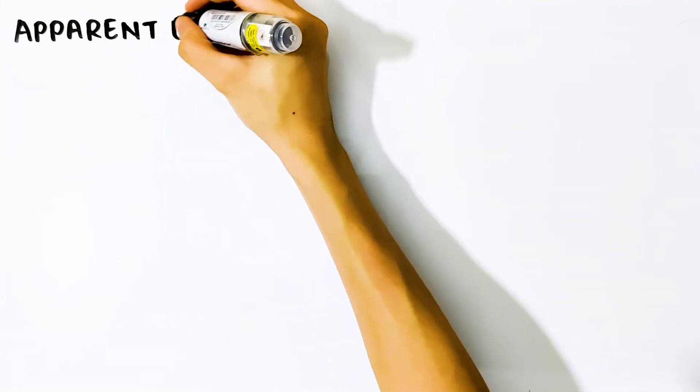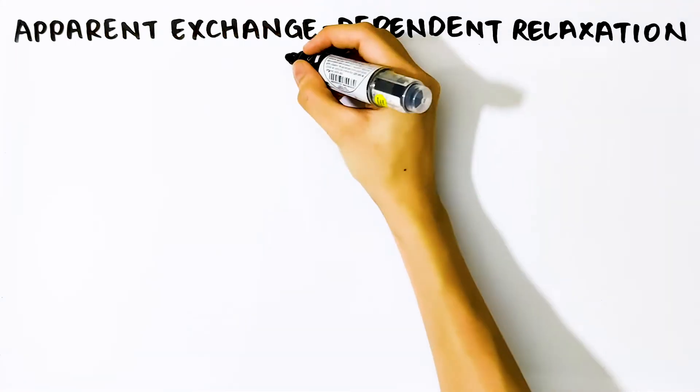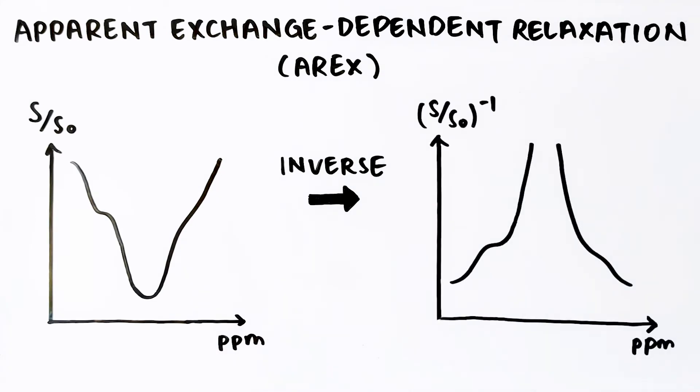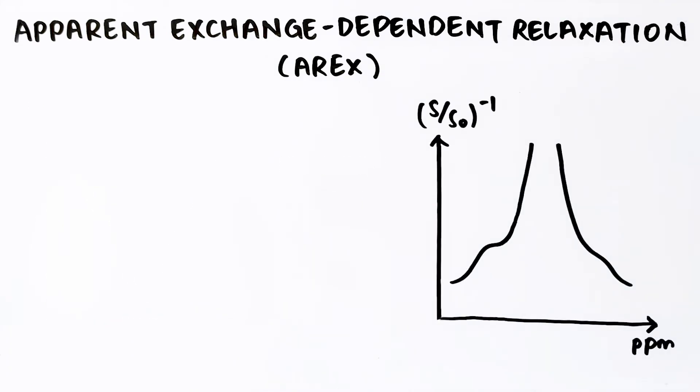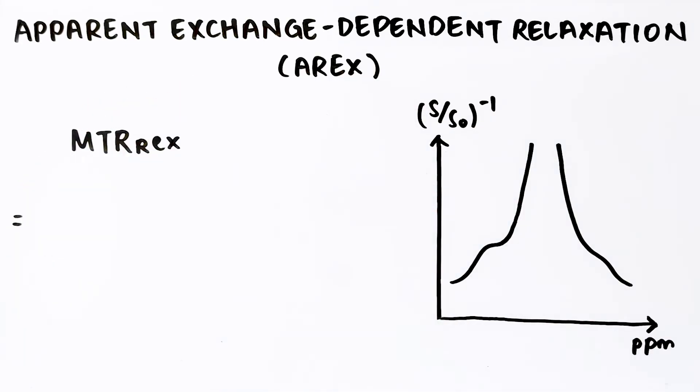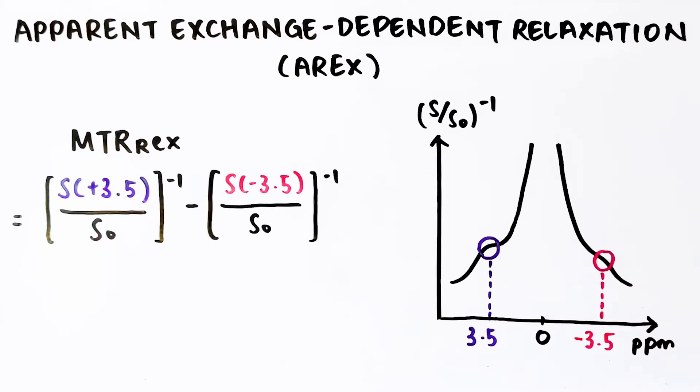Another method for correcting water spillover and MT effects is the apparent exchange-dependent relaxation, termed as ARex. This method makes use of the inverted signals of the Z-spectrum to analytically correct for spillover and MT effects. Firstly, the spillover-corrected MTR is calculated as the difference between the inverse of the amide signal and the inverse of the reference signal. The reference signal here may not necessarily be the signal at the opposite frequency offset at negative 3.5 parts per million. An appropriate reference signal depending on the experimental parameters should be used for optimal results.